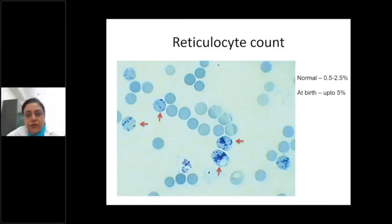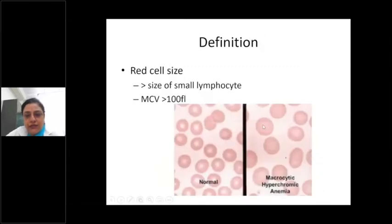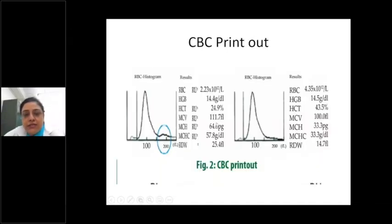Without wasting time I'll just rush through the lab diagnosis of macrocytic anemia. There are two ways to classify a cell as macrocytic. One is to directly see under the microscope how big the cells are — the reference used is the nucleus of a small lymphocyte. The other parameter is MCV, which is more than 100, as seen on a CBC printout.